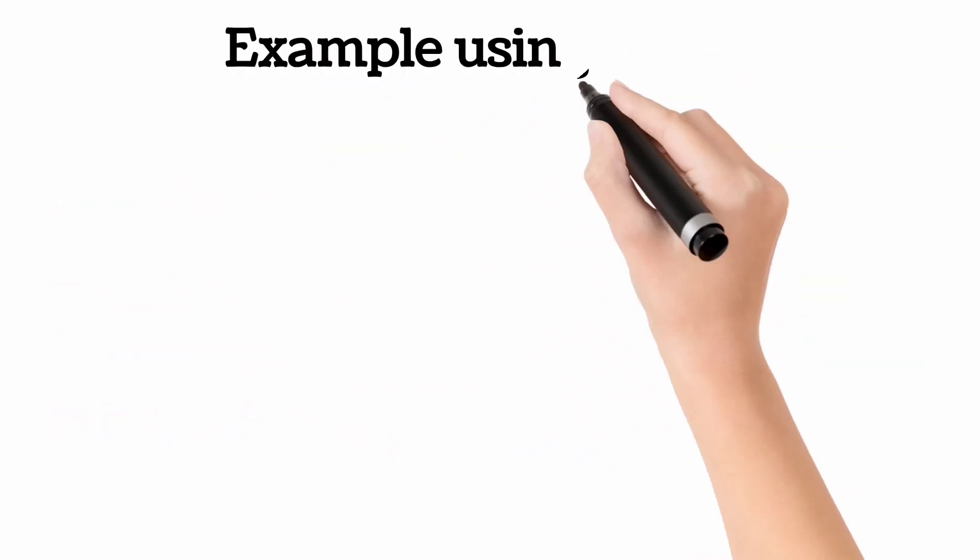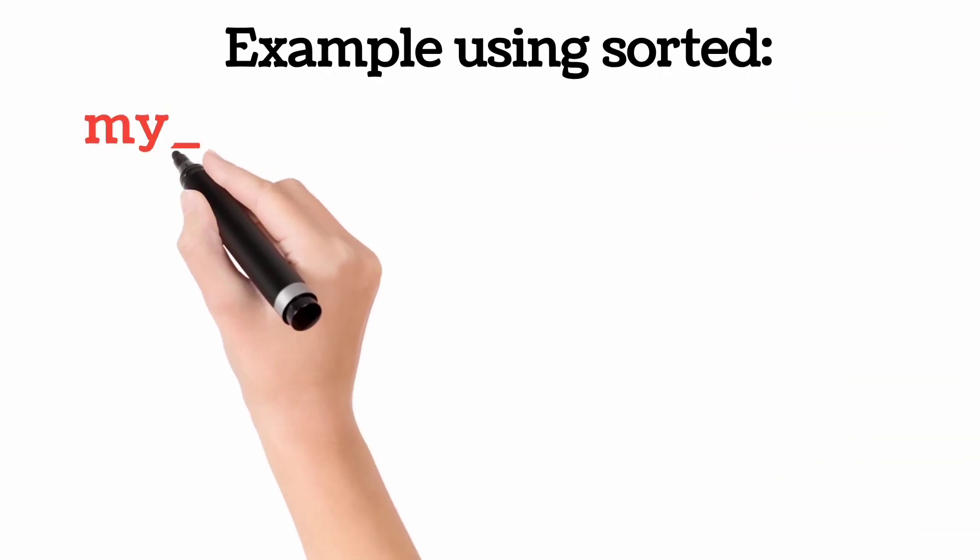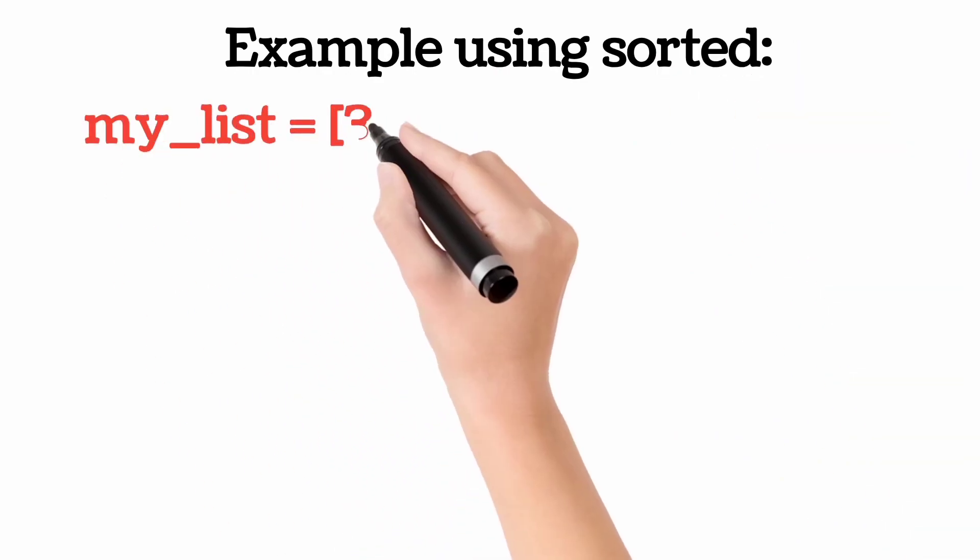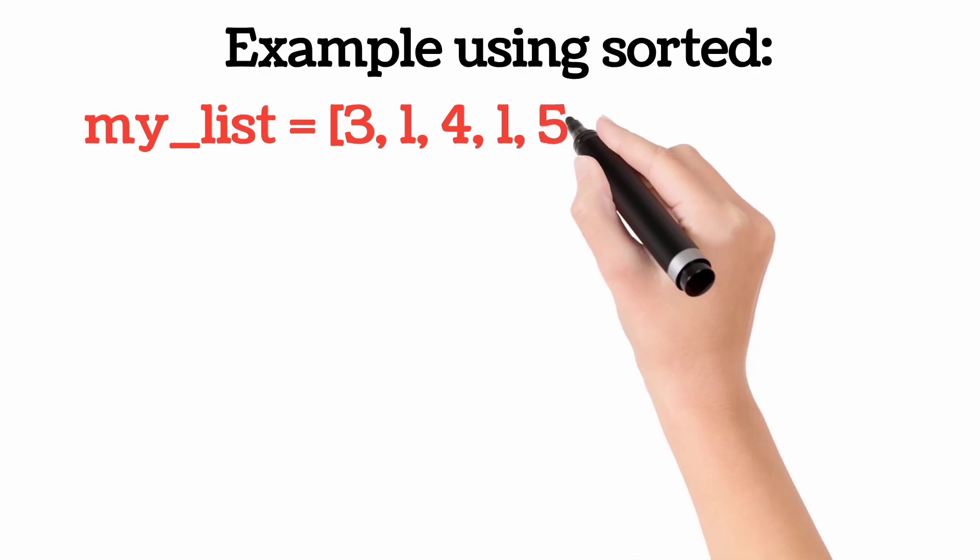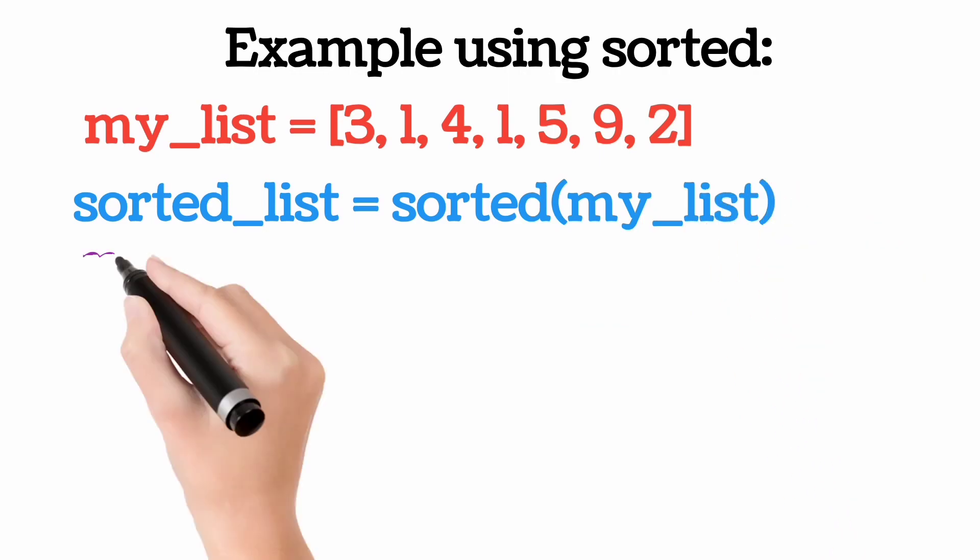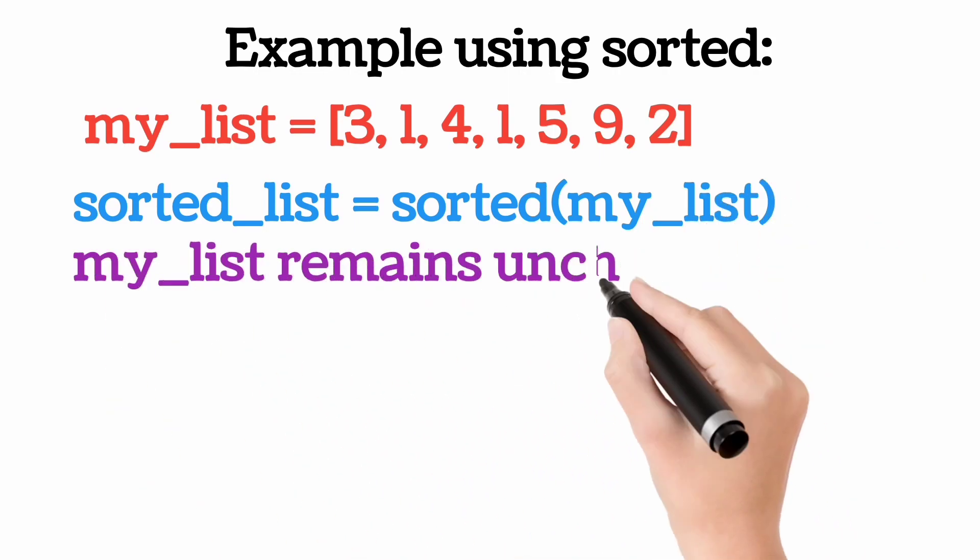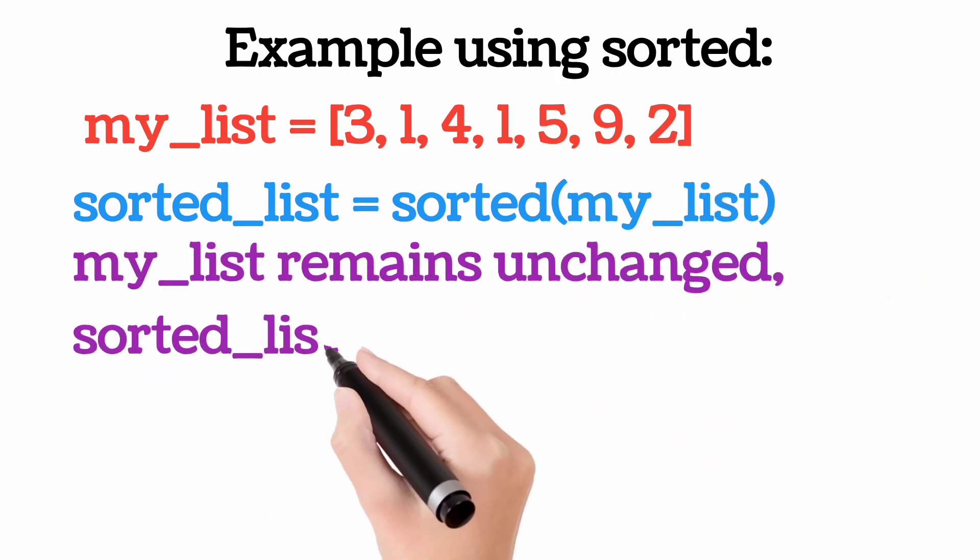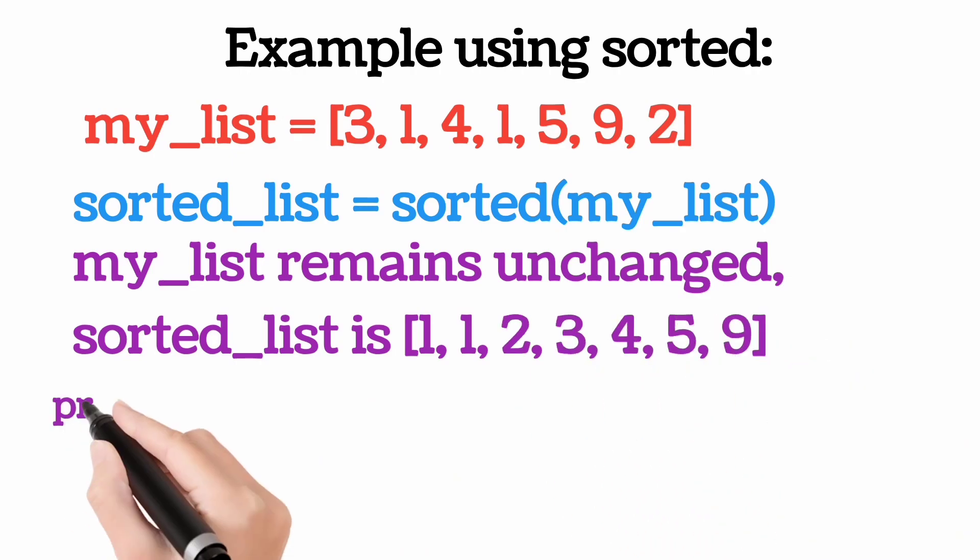Example using sorted. My_list equals [3, 1, 4, 1, 5, 9, 2]. Sorted_list equals sorted(my_list). My_list remains unchanged. Sorted_list is [1, 1, 2, 3, 4, 5, 9].